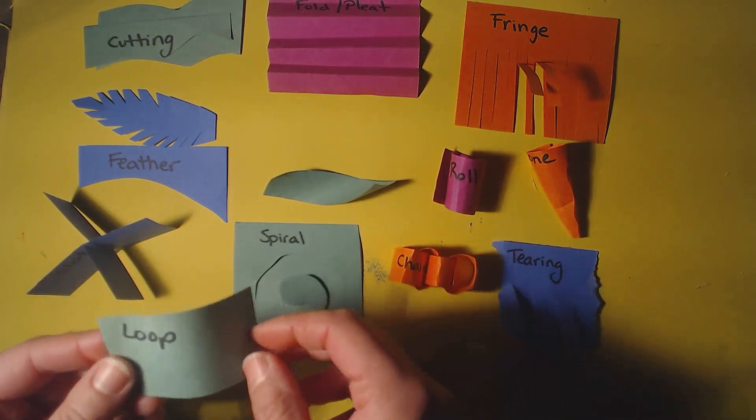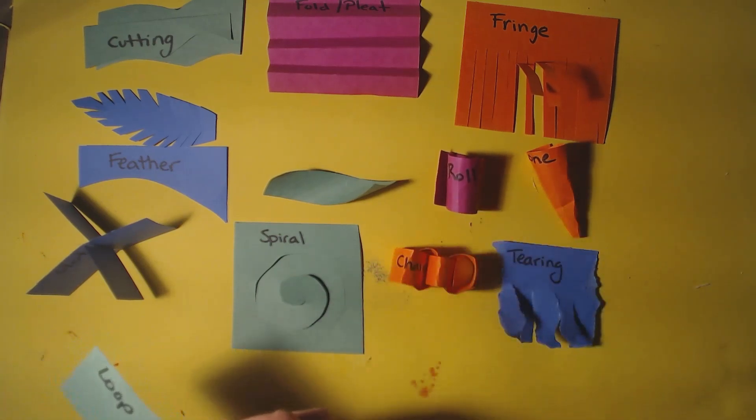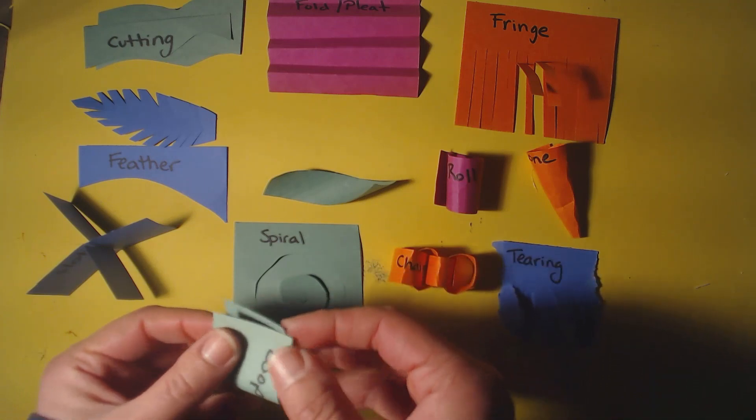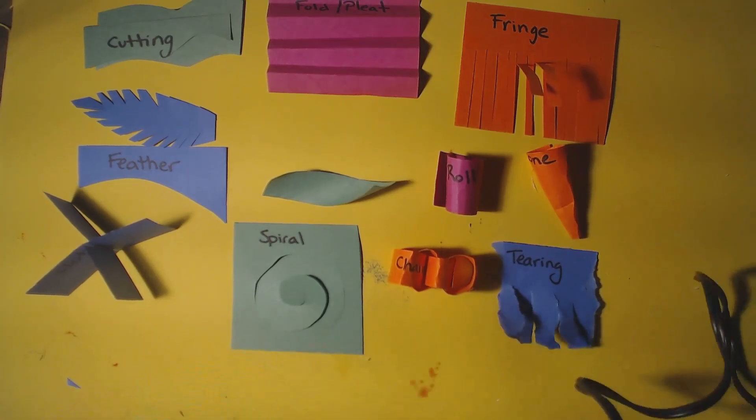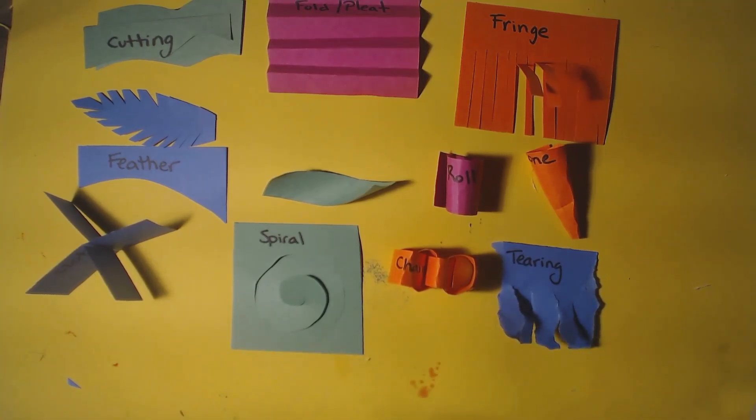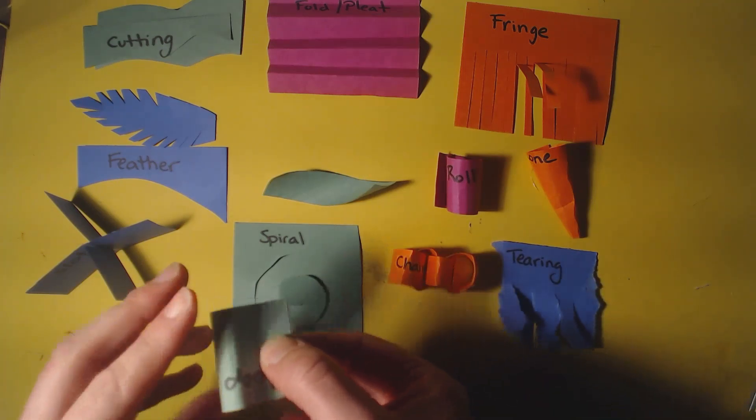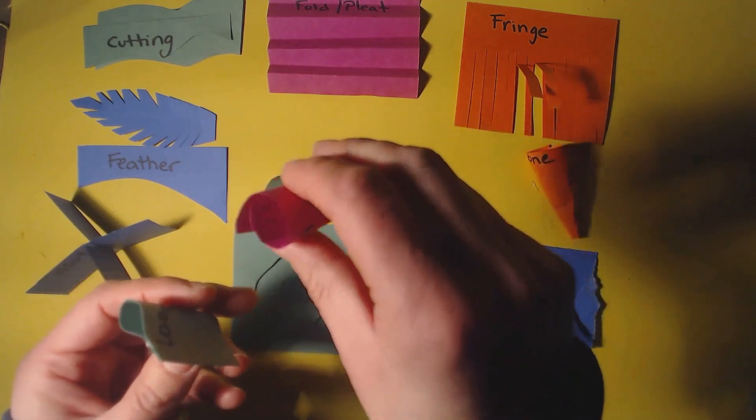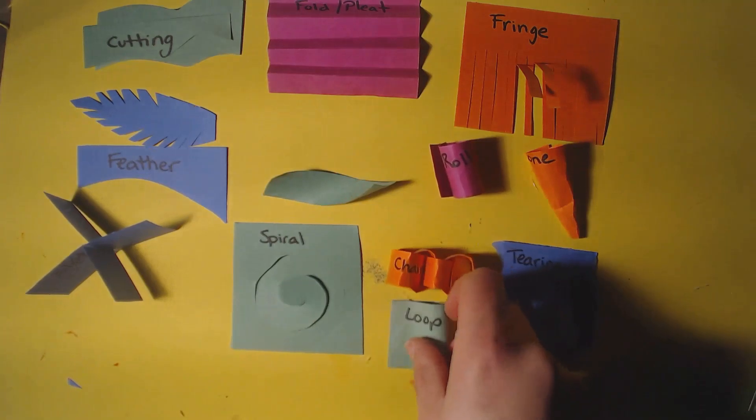This one is the loop. So the loop is kind of like the roll. But when you're doing the loop, you are kind of keeping it into a shape. So instead of keeping it like a circle, you can pinch it together like this and it makes more of a teardrop shape. So I'm going to stick to my hot glue just so I can show you what it looks like. So this one, I'm pinching it more. And you get more of a teardrop shape instead of a circle shape. And the roll, you can also glue it to make it more of a circle. So that is the loop.